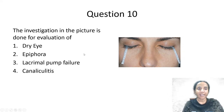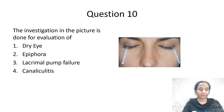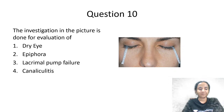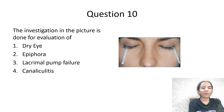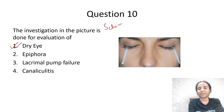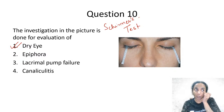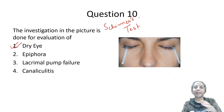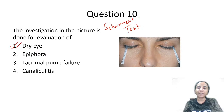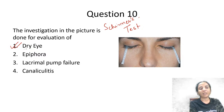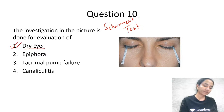This is the last question of the day. What is this investigation used for? This is Schirmer's test, used for evaluation of dry eye. You can see this strip — called Whatman's filter paper number 41 — inserted in the lower fornix at the junction of the medial two-thirds and lateral one-third. You measure how much of the strip is wetted at the end of five minutes.